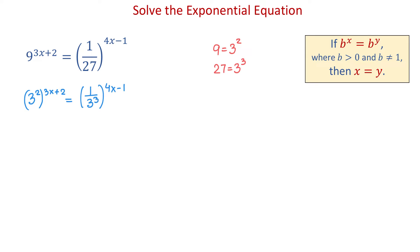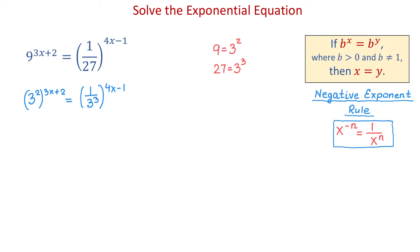In the next step, we will use the negative exponent rule to move 3 cubed up to the numerator. According to this rule, if we have an exponential expression in the denominator and we move it up to the numerator, then the exponent changes sign. So if we move 3 cubed up to the numerator, it will become 3 to the power of negative 3. Then we will have 3 squared raised to the 3x plus 2 equals 3 to the negative 3 raised to the 4x minus 1.